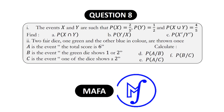Equation 8 comes from the topic probability. The events X and Y are such that P(X) = 2/5, P(Y) = 1/2, and P(X∪Y) = 4/5. Find: A, probability of X intersection Y; B, probability of Y given X; and C, probability of X prime given Y prime.